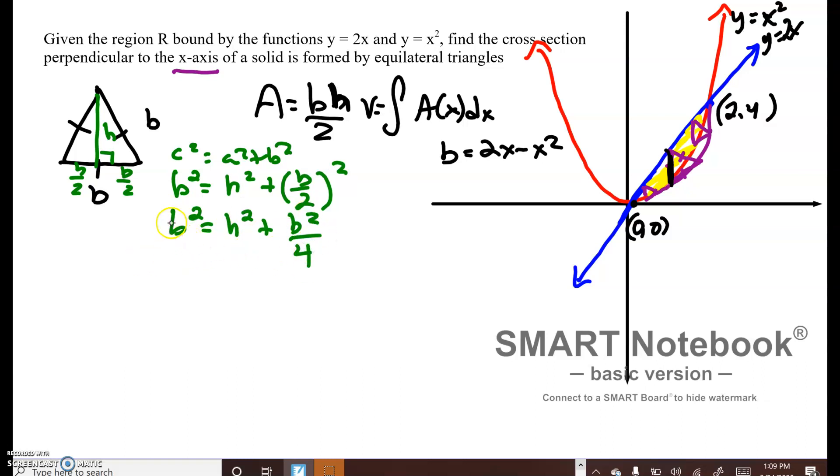I'm going to get my b squares on the same side. I'm going to change this to 4b squared over 4. So h squared equals 3b squared over 4. If I take the square root of the top and the bottom, I have radical 3b over 2.